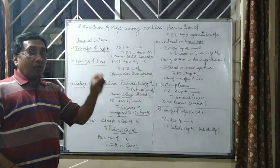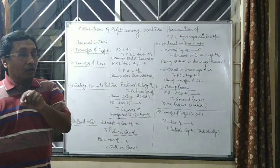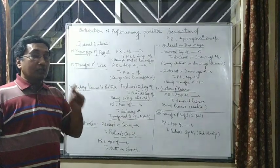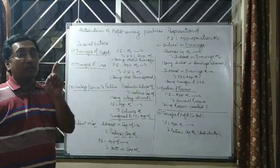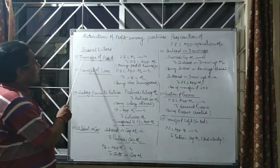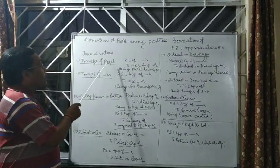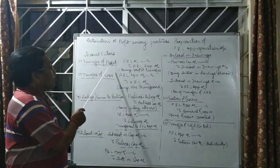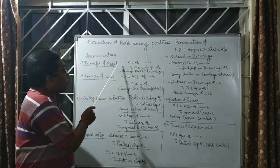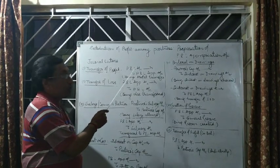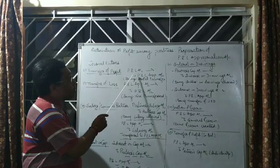Gross profit or gross loss is transferred to profit and loss account. Similarly, in case of profit and loss appropriation, net profit is transferred to profit and loss appropriation account. The first entry is transfer of profit. As you know, profit shows credit balance. When you are going to transfer the balance of profit and loss account, it should be debited. So the entry is: profit and loss account debit to profit and loss appropriation account — meaning this will be posted to the credit of profit and loss appropriation account.